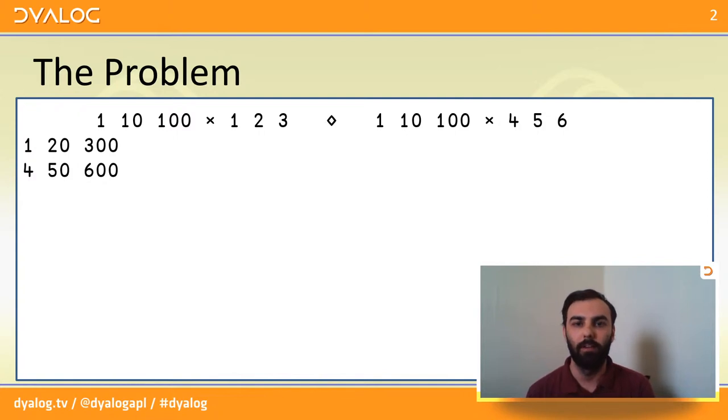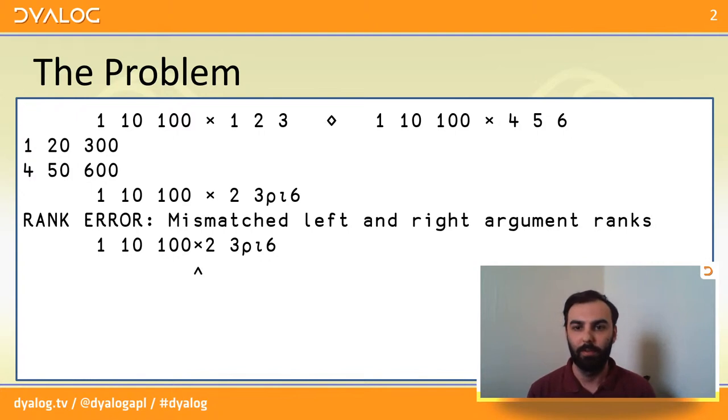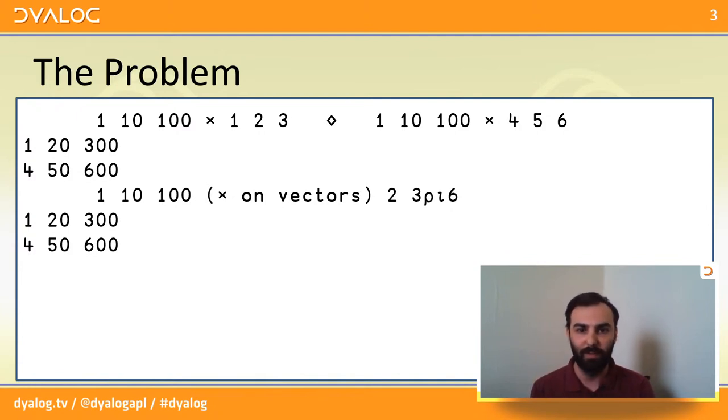The problem I have is that my two vectors live in a matrix. Now, I can see how I'd like my three-element vector to be extended into an array so that I can multiply it with my two vectors in the matrix. But Dialog doesn't quite see it the way I do, at the moment. And I was really thinking, wouldn't it be nice if I could just multiply on vectors so that my vector on the left-hand side matches up with the two vectors in my matrix, and I get the result I want? Well, it turns out that since Dialog version 14, you have been able to do this using the Rank Operator, and that's the focus of today's webinar.